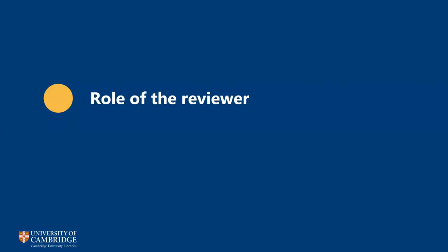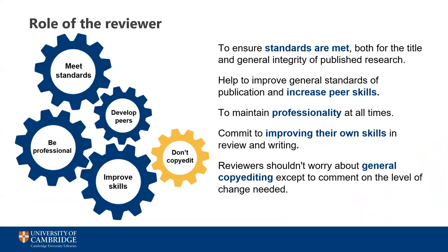We often talk about peer reviewers being a vital part of the scholarly research ecosystem, but what are they actually expected to do? At a basic level, they'll need to look at the output and assess its suitability for publication, but there are lots of different roles under this umbrella. They need to make sure that the standards both of the particular title and the wider integrity of published research are met. Reviewers need to ensure that scientific standards are met, that there are no obvious biases, that appropriate methodology has been used, and that conclusions are sound and based on the actual research undertaken. You're there to help the journal editor make an informed choice about what they should publish.